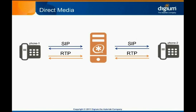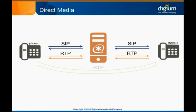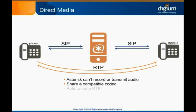One additional concern related to SIP and NAT involves direct media. The SIP protocol and the phones that implement it are smart enough to send media directly to each other. There's no strict requirement for a system like Asterisk to handle the media between two SIP endpoints, because it's a peer-to-peer protocol. Asterisk supports a feature that allows two SIP phones to send media directly to each other and bypass Asterisk after calls have been set up. Asterisk has to forego the ability to record or transmit audio to either phone, the phones must share a compatible codec, and the phones need to be able to route RTP to each other. Asterisk will try to re-invite phones to send media directly to each other by default.